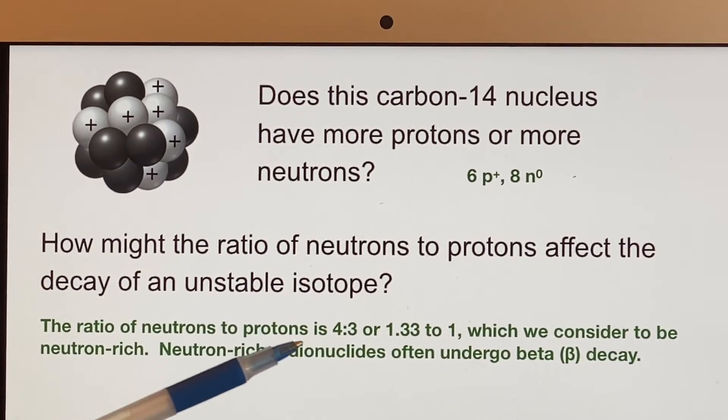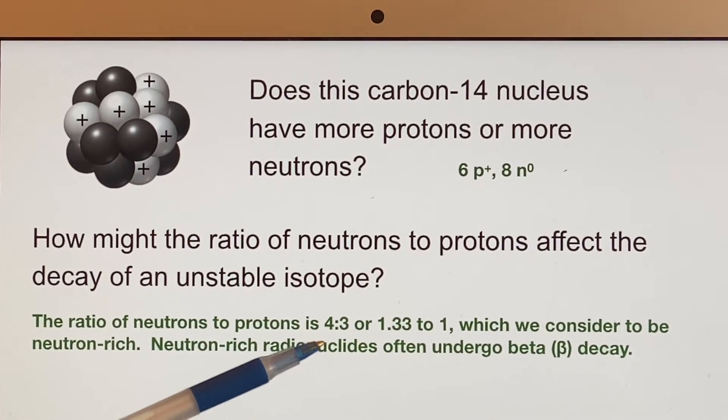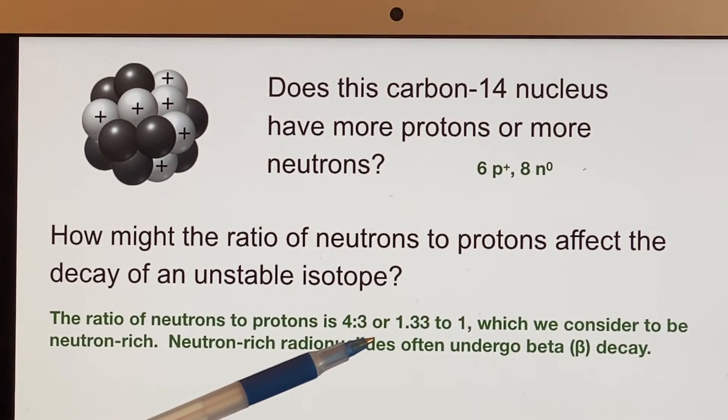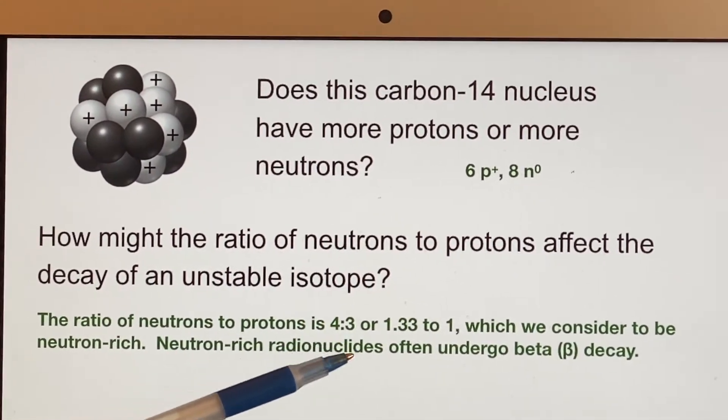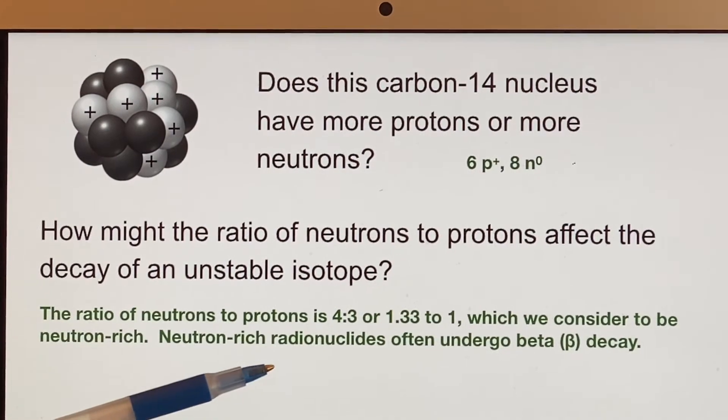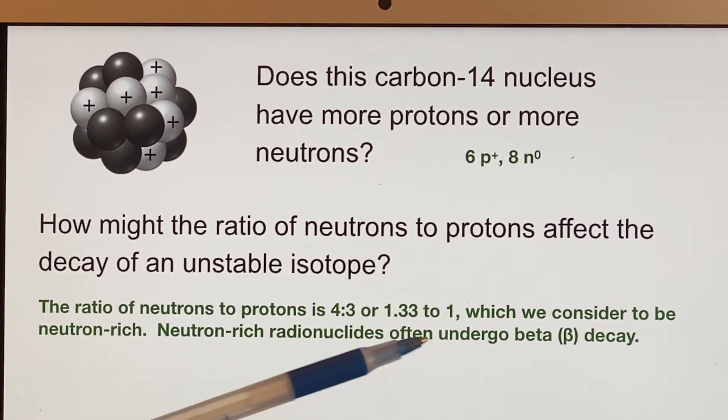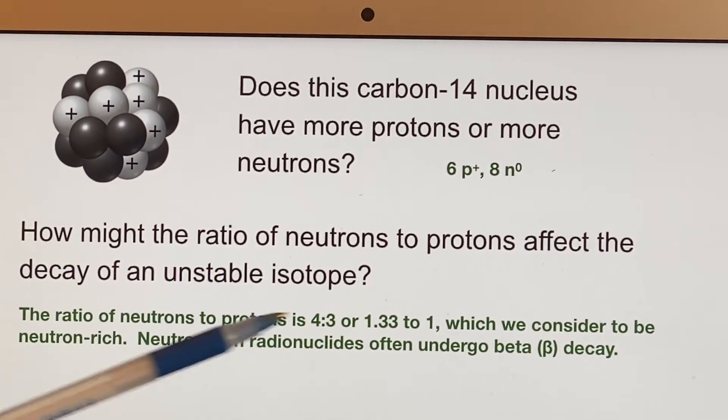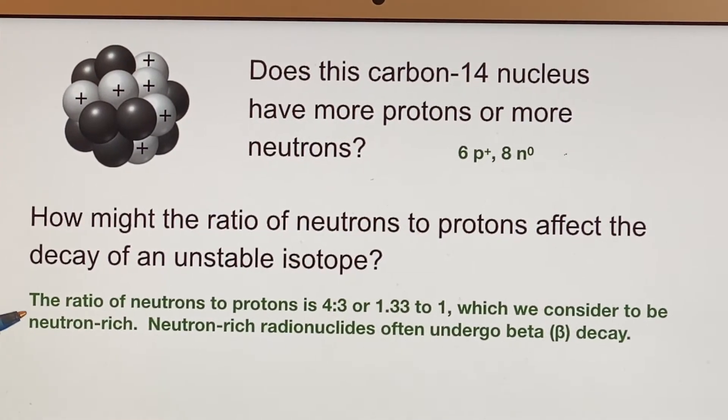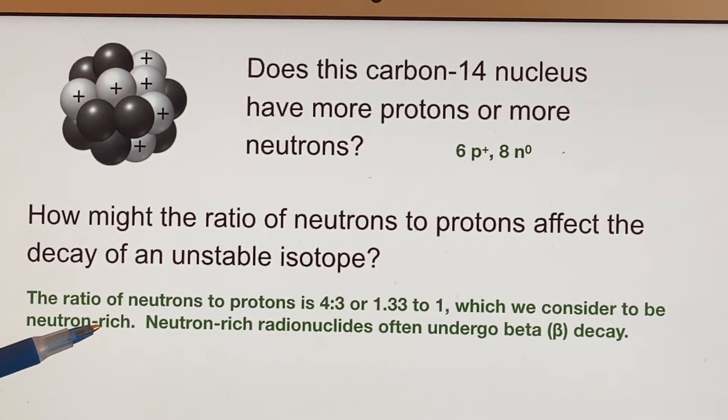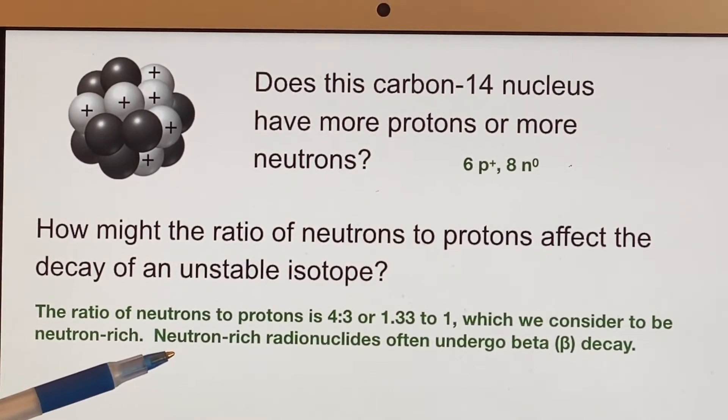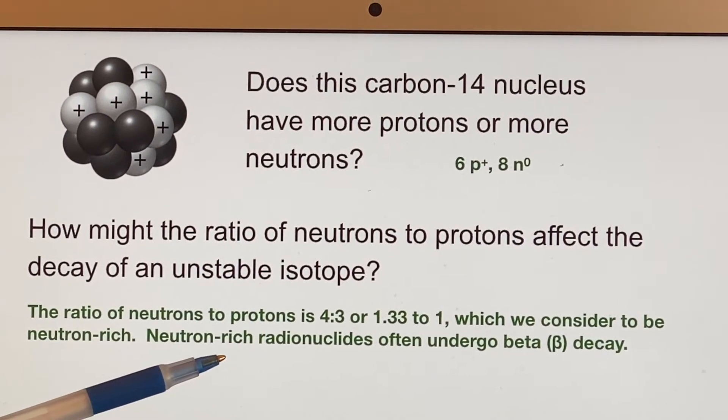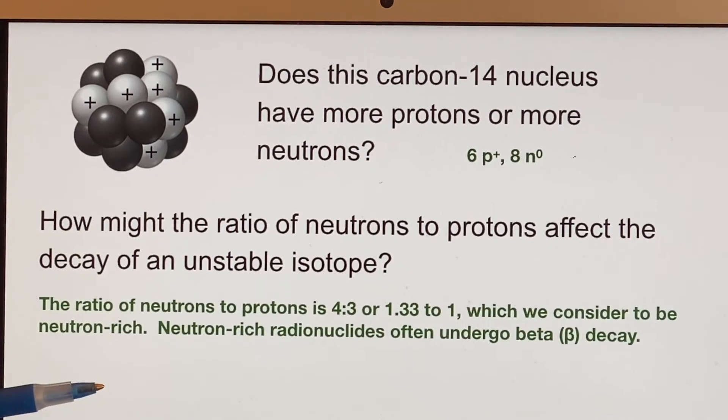And here we have an example. In this one, we would say that the ratio reduces to four compared to three. It was eight compared to six. And if you went ahead and put that in your calculator, it'd just tell you it was 1.33. And since we're doing neutrons to protons, we would consider that to be neutron rich. And one of the things that we find out just by experiment is that neutron-rich radionuclides often undergo beta decay.